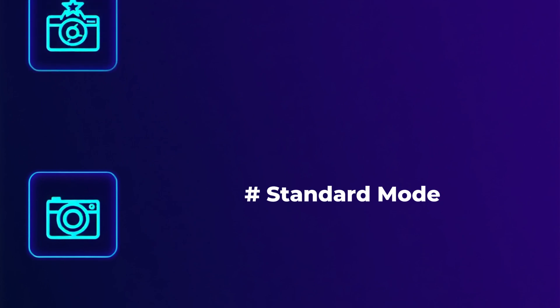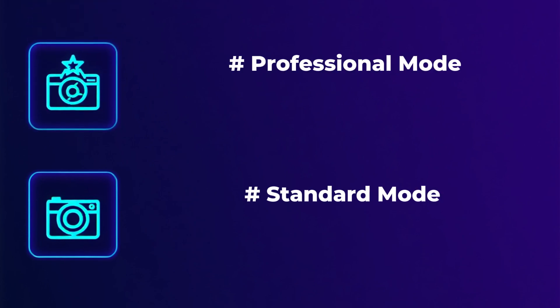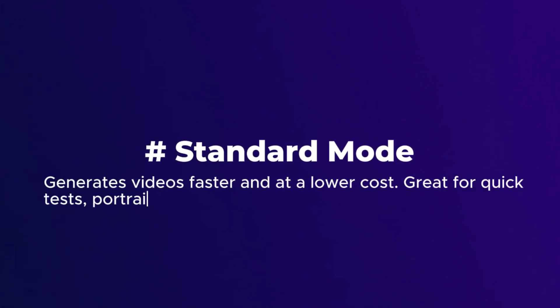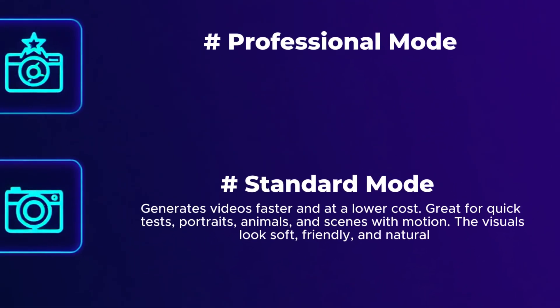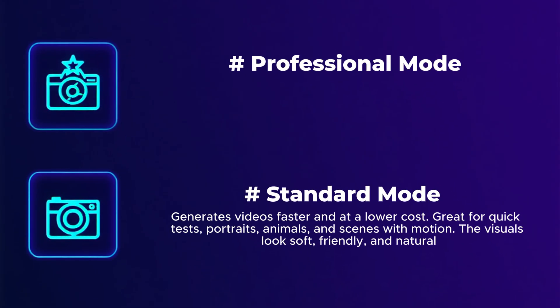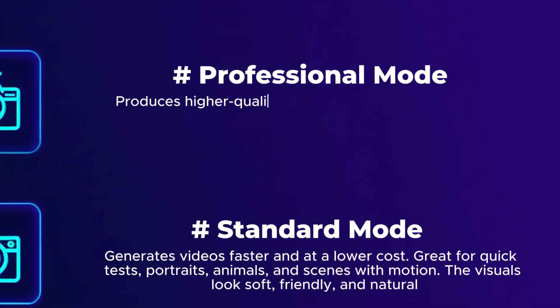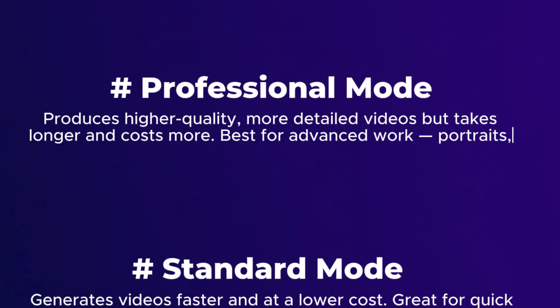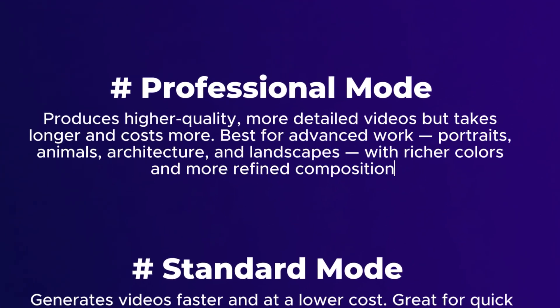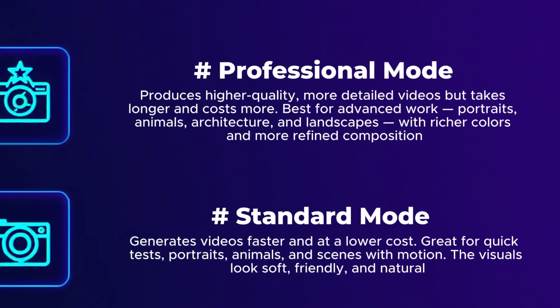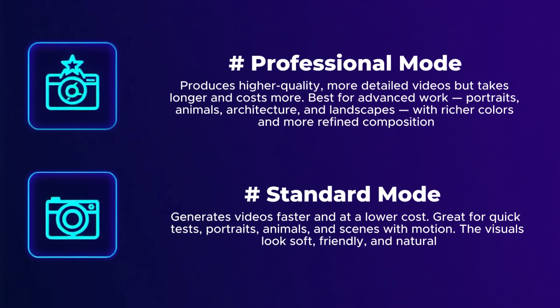For my projects, I don't really use text to video because I usually work with specific projects, but I use image to video a lot. There are two basic modes: standard and professional. Standard is fast and cheap with a quick result, but it doesn't always look natural and good. You should use professional mode because, yes, it's slower and more expensive, but it delivers the best quality. So for my work, I will always choose professional mode.